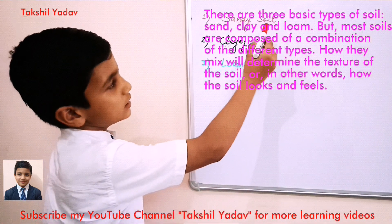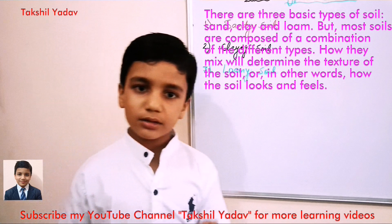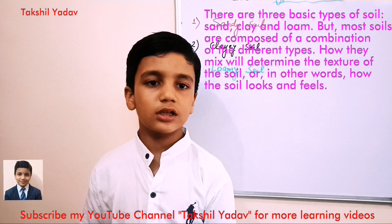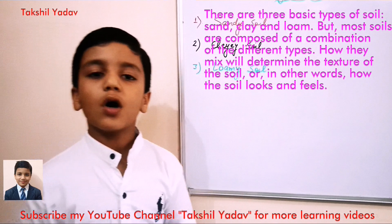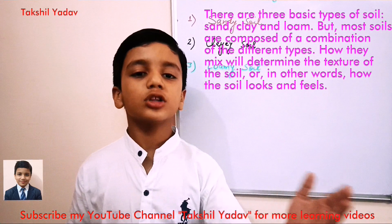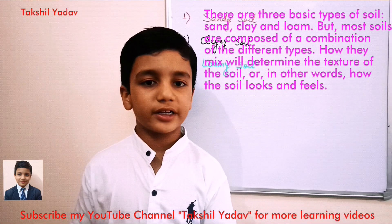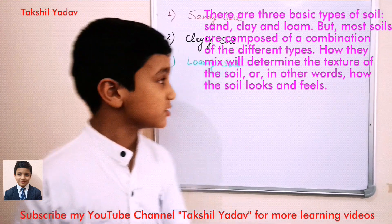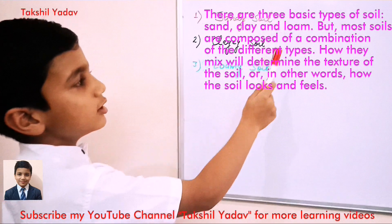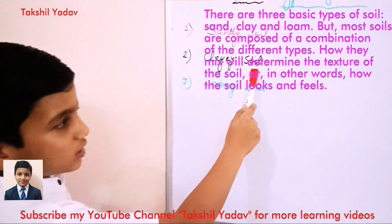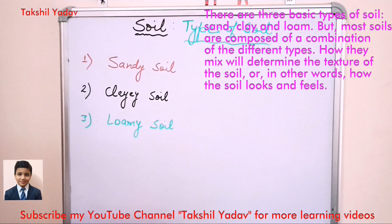Now, the types of soil. The main three types of soil are made on the basis of the type of particles and the amount of particles present. These types are sandy soil, clay soil, and loamy soil. Let us study about them in detail.